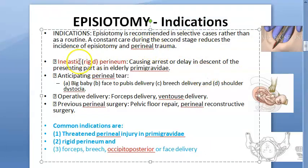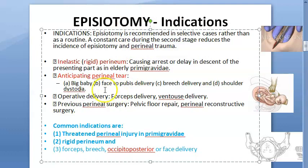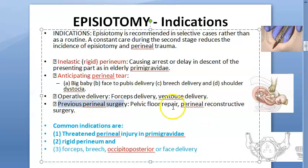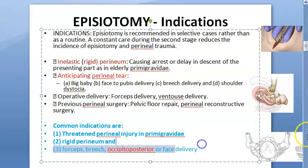We looked at the indications. Basically, indications are an inelastic or rigid perineum. If you are anticipating a perineal tear — like in a breech delivery, big baby, face-to-pubis delivery, or shoulder dystocia — all this was covered in the previous video. Operative delivery means if you want to do forceps or vacuum delivery. For previous perineal surgery, if this patient has had pelvic floor repair and reconstructive surgery, you wouldn't want to put stress on that repair, so episiotomy is done. Common indications: threatened perineal injury, rigid perineum, forceps, breech, or occipital posterior or face delivery.